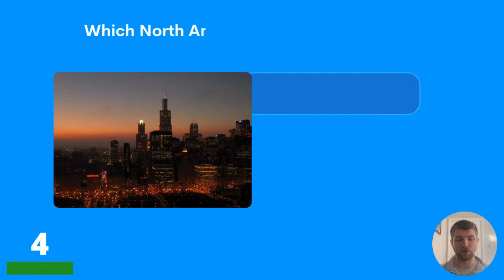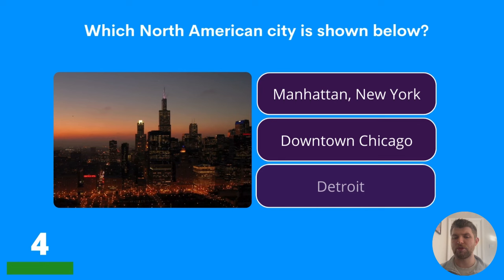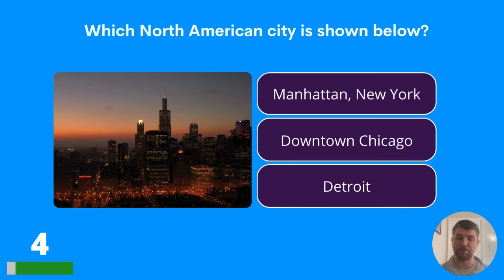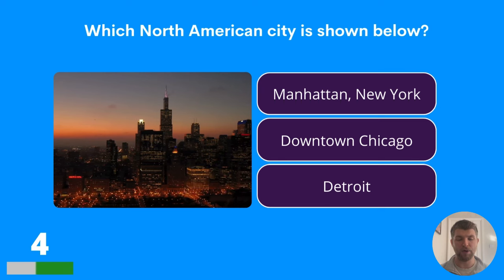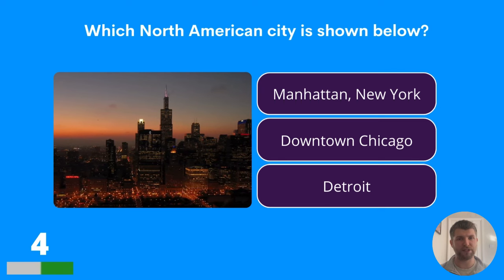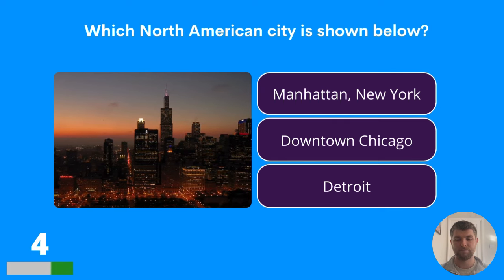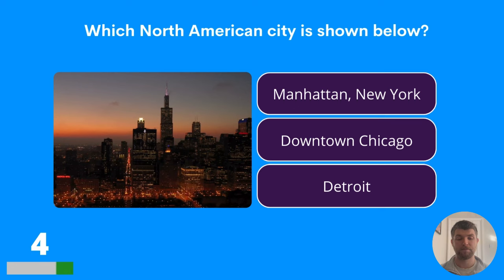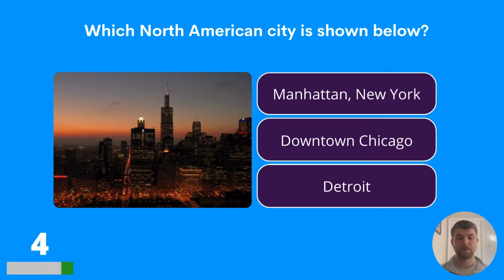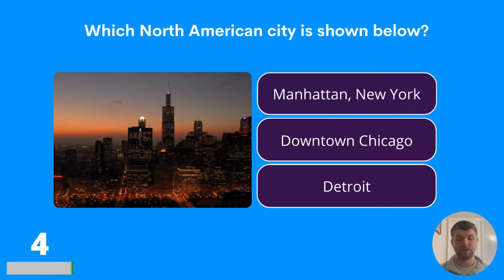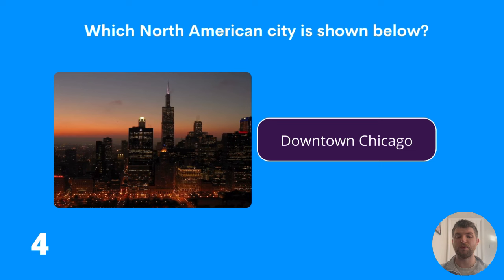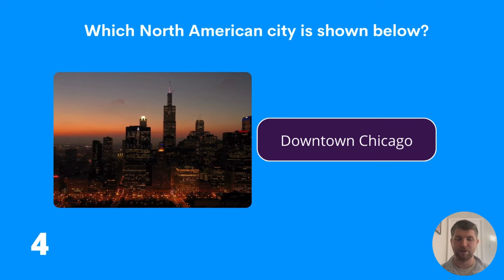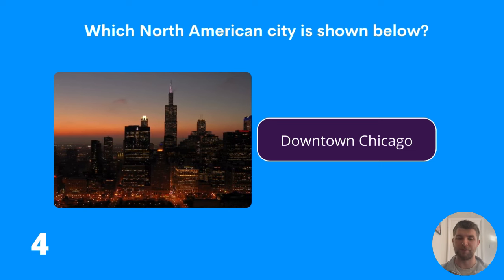Question four: which North American city is shown below? Is that Manhattan in New York? Is it downtown Chicago, or is it Detroit? That is a little view of downtown Chicago. Well done if you got that one right.